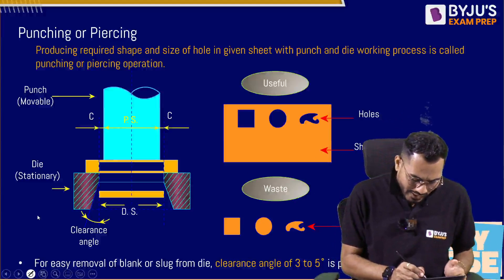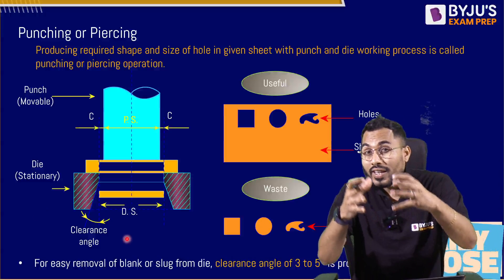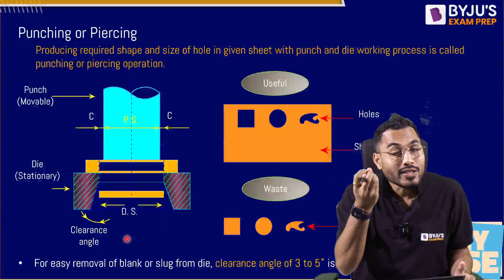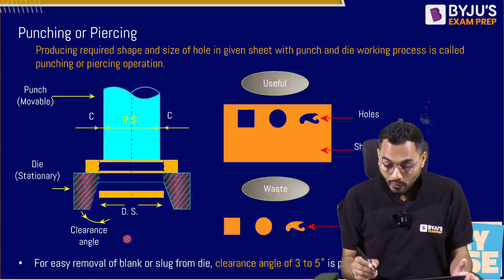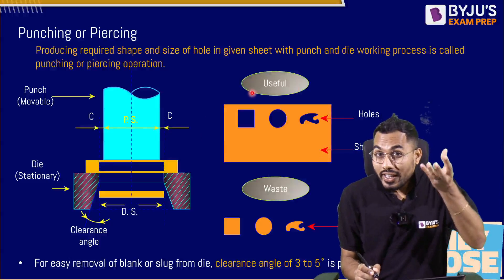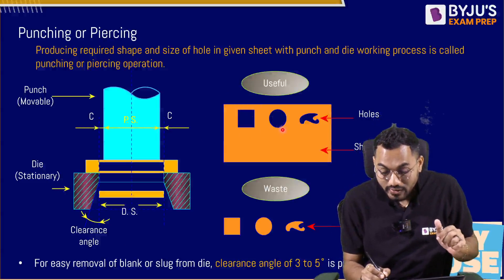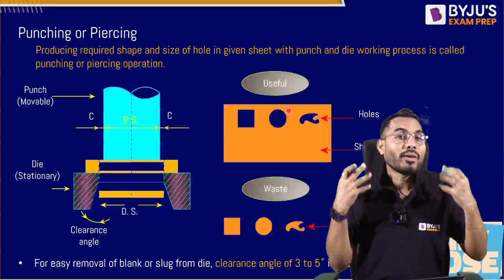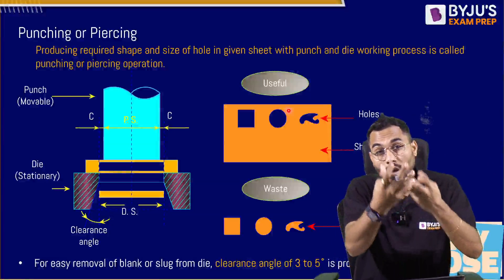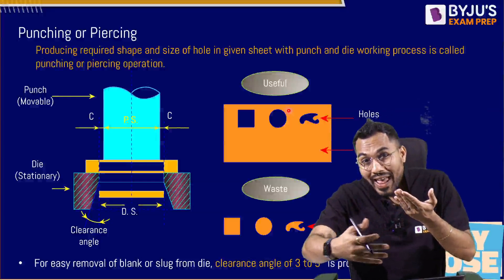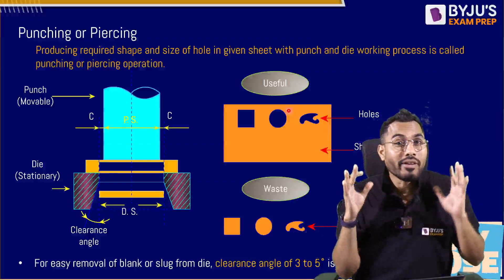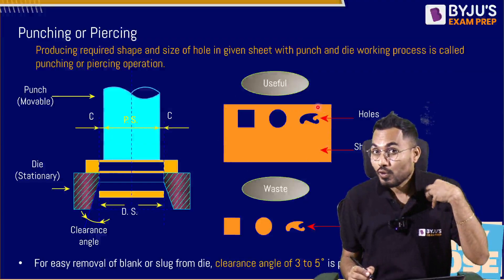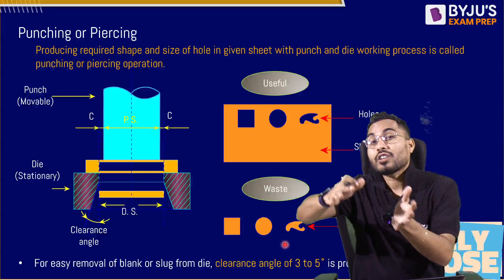What is meant by punching and piercing operation? Producing a hole of required shape and size in a given sheet is called punching or piercing. When a raw metal sheet is given to you and you want to produce a required shape of hole, that is called punching and piercing. Whatever blank or slug comes out will be wastage. Therefore in punching and piercing, the raw material sheet is useful whereas the blank or slug is wastage.